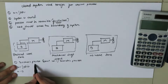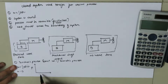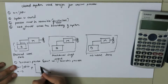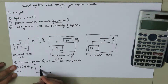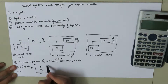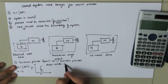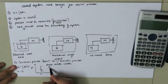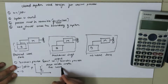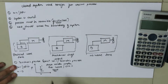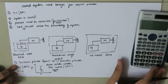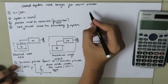If we plot this on our PV diagram, with initial state 1 and the process going from state 1 to final state 2, the area under the curve — or line — is zero. So the work done in the isochoric process equals zero.